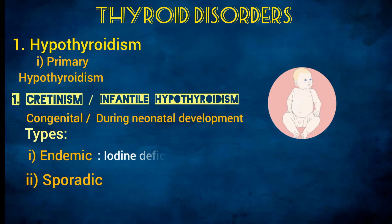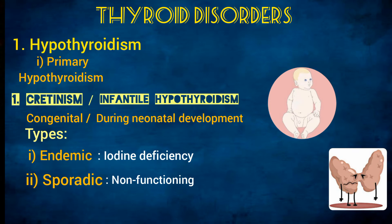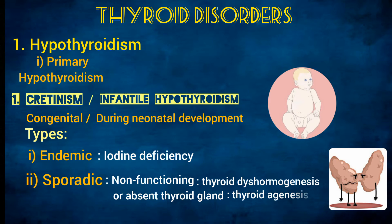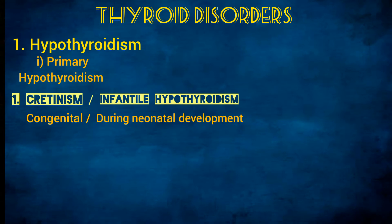Cretinism has two types: endemic and sporadic. Endemic cretinism occurs due to iodine deficiency, so children born and living in areas of severe iodine deficiency will have it. Sporadic cretinism occurs either due to a non-functioning thyroid gland, because of thyroid dyshormogenesis, or an absent thyroid gland due to thyroid agenesis.